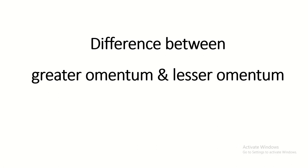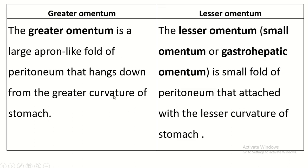In this video, I discuss the difference between the greater omentum and lesser omentum. The greater omentum is a light apron-like fold of peritoneum that hangs down from the greater curvature of the stomach.